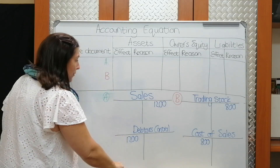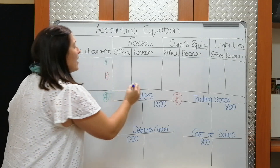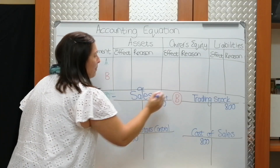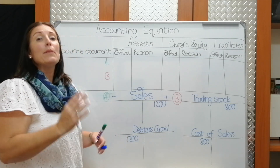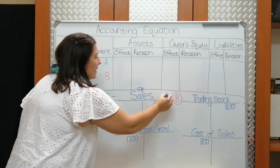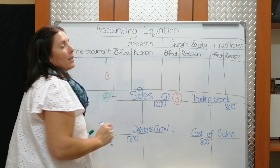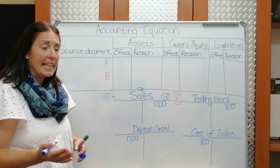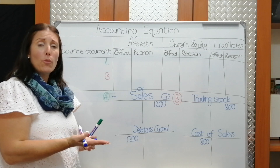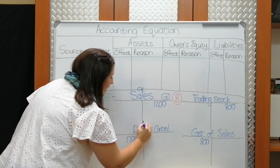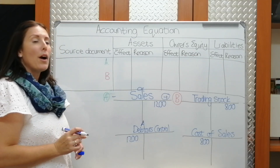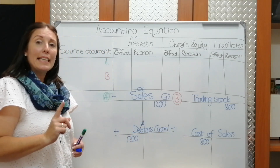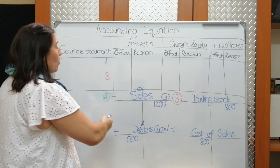Let's recap: we sold to Kylie Borne for 1200 Rand. Remember, sales is an owner's equity account. The rule for owner's equity is debit minus, credit plus. So when we sell to somebody on credit, sales is an income — it increases owner's equity — so we recorded that 1200 on the credit side of sales. We sold to Kylie Borne, and the debtor's control is just the summary of all the debtors' debts in our books — that is an asset to our business.